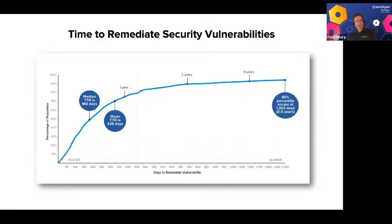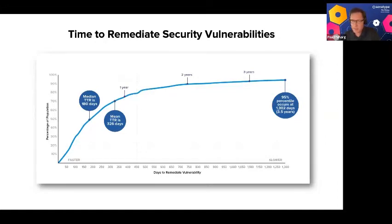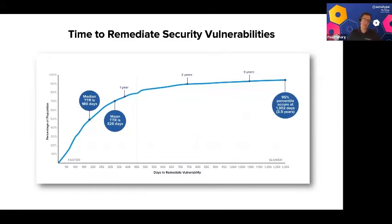Looking at the components we analyzed for the study, we found some interesting and in some ways disturbing results. The median time to repair a vulnerability in a component was 180 days — about half a year. The mean time to repair is approaching a year at 326 days. At the 95th percentile, 5% of these components aren't even fixed after three and a half years.